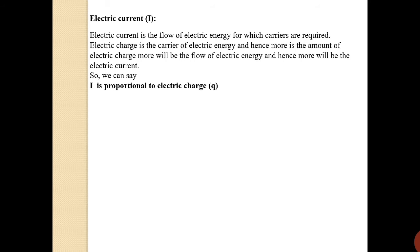The simple concept is that electric current is nothing but the flow of electric energy within the conductor. For the flow of this electric energy we need particles which can carry the electric energy from one end to the other end of the conductor — these are the charged particles or free charges within the conductor. If we increase the amount of charge flowing through the conductor, the electric energy and hence electric current will also increase. So electric current is proportional to electric charge: I ∝ Q.